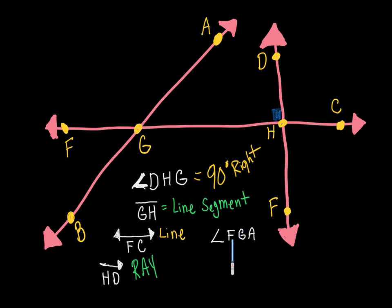Well, let's find F-G-A. F-G-A. So this is considered, first of all, what kind of angle is F-G-A? Well, that is an obtuse angle, because it's definitely greater than 90 degrees.